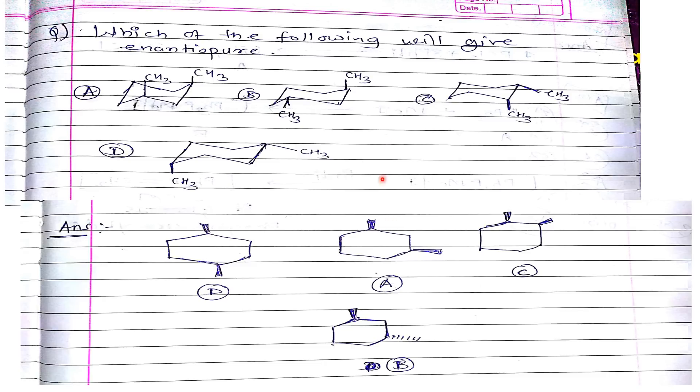In the first case, 1,3-dimethyl, cis 1,3-dimethyl, in this case also the plane of symmetry is going from here to here. So this is also not the enantiomer.